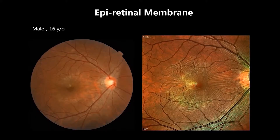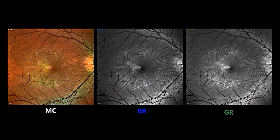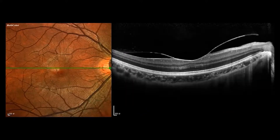The first case is epiretinal membrane. On the multicolor image, we can appreciate the structural changes of the epiretinal membrane. The epiretinal membrane also stands out on blue and green reflectance. Combining with OCT, the epiretinal membrane is shown clearly. Multicolor imaging demonstrates better structural changes than color fundus photo on epiretinal membrane.